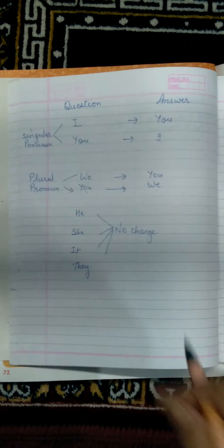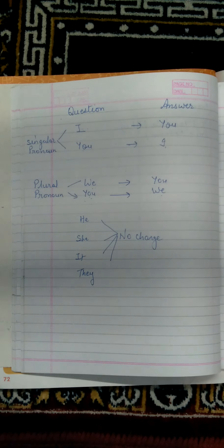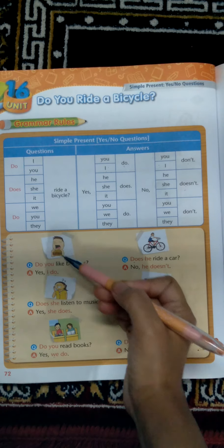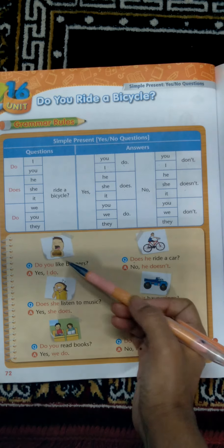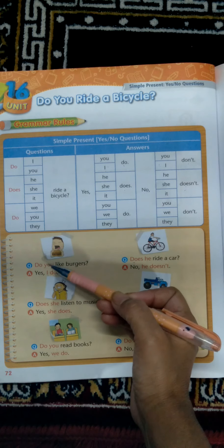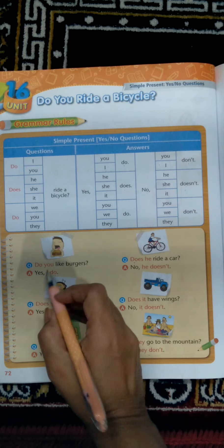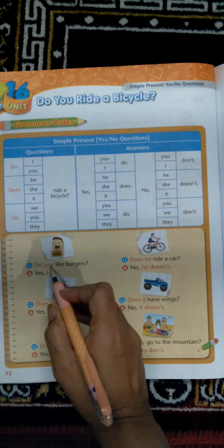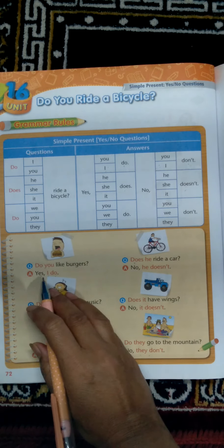We have to look at the picture and give the answer. Question one: 'Do you like burgers?' We can see a boy eating a burger, so we give the positive answer. We change the pronoun 'you' to 'I' and give the positive answer: 'Yes, I do.'